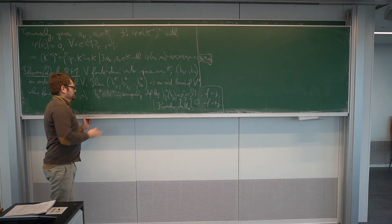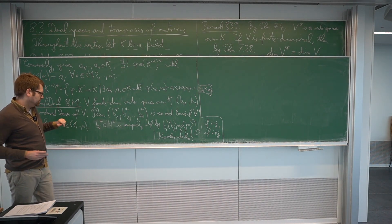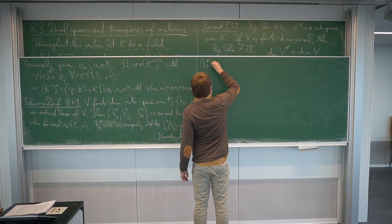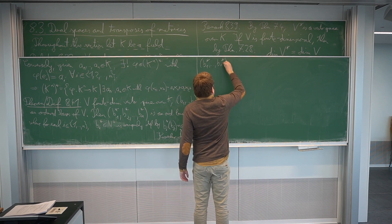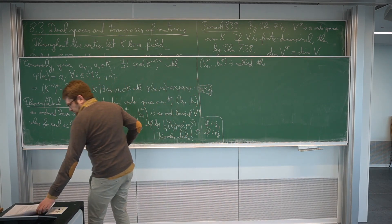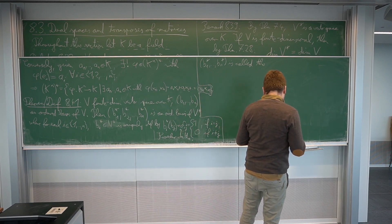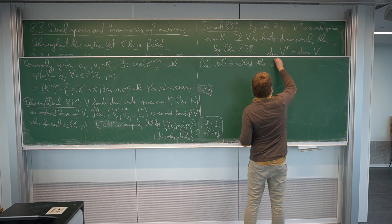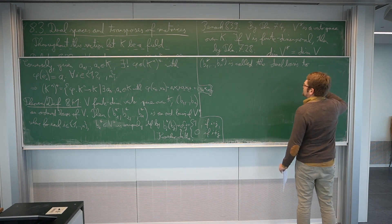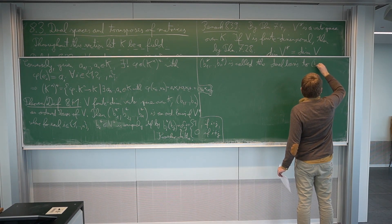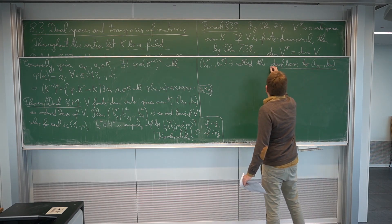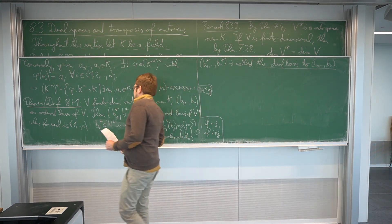So this is how we can define the basis. We want the unique linear form such that it's 1 on the vector bi and 0 on all others. This is kind of the way how we get a basis. And this is always an ordered basis. Now for the definition. This basis of the dual space, B1 star to BN star, is called the dual basis to the basis B1 to BN.